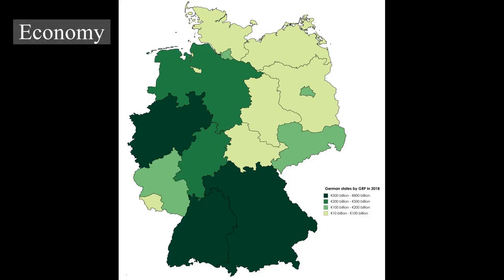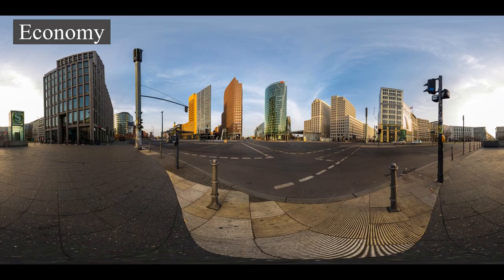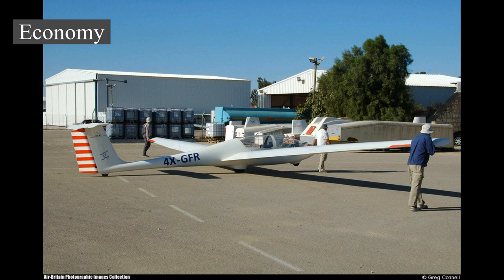Infrastructure: With its central position in Europe, Germany is a transport hub for the continent. Its road network is among the densest in Europe. The motorway Autobahn is widely known for having no general federally mandated speed limit for some classes of vehicles. The Intercity Express (ICE) train network serves major German cities as well as destinations in neighboring countries with speeds up to 300 km/h (190 mph). The largest German airports are Frankfurt Airport and Munich Airport. The port of Hamburg is one of the top 20 largest container ports in the world.